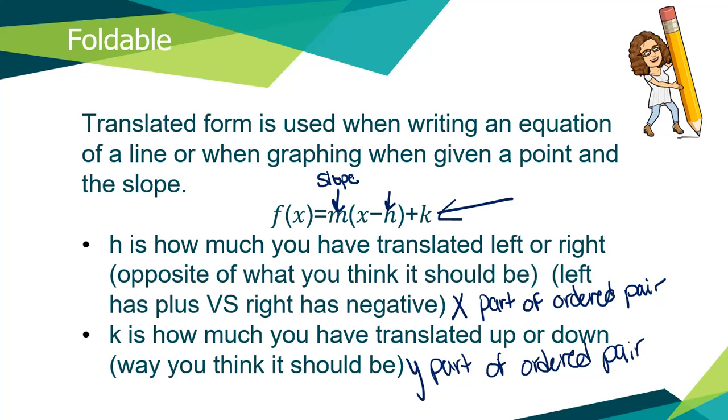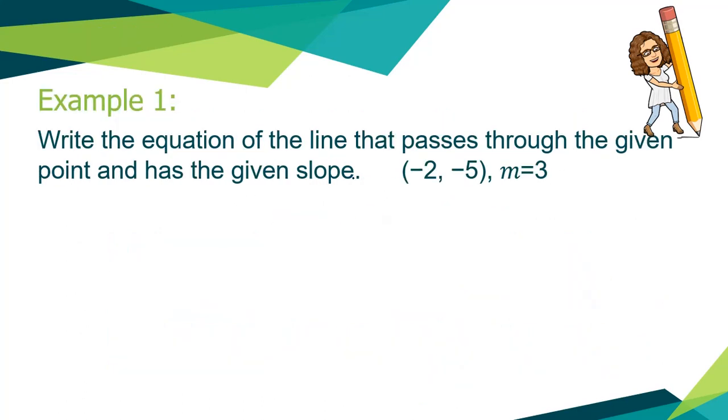So we're going to be using this to write equations of lines just like I did at the beginning there, but this is going to be a lot quicker than solving for b. So let's actually try an example here. So I need to write the equation of a line that passes through the given point and has the given slope. They tell me that the point is negative two, negative five, and my slope is three. So I'm going to use my translated form of my lines. So y equals m, x minus x, or h plus k.